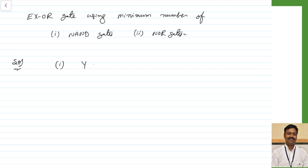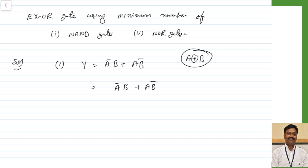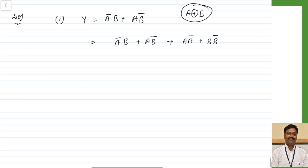We know the expression for the exclusive OR gate is A bar B plus A B bar, that is A exclusive OR B. So we know that the exclusive OR gate can be represented as A bar B plus AB bar. I can apply Boolean algebra to expand it, so I am taking A bar B plus AB bar.